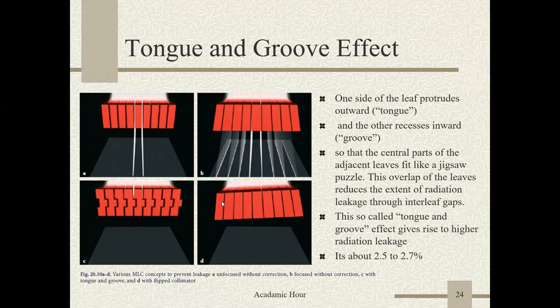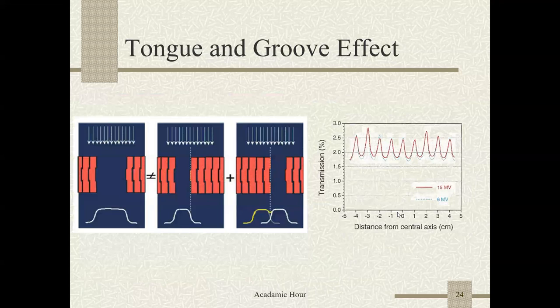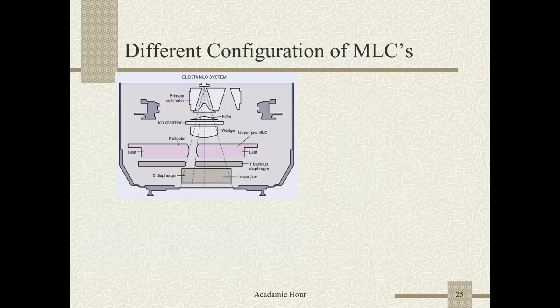Tongue and groove effect: if you don't make the leaf in the shape of tongue and groove, the interleaf transmission will increase. One side of the leaf protrudes outward — that's called the tongue — and the adjacent part is the groove. The central part of the adjacent leaf fits like a jigsaw puzzle, overlapping the leaf and reducing the extent of radiation leakage through the interleaf gap. This is called the tongue and groove effect, and it gives rise to about 2.5 to 2.7% radiation leakage.